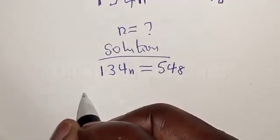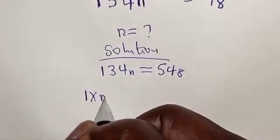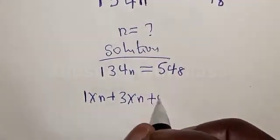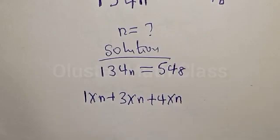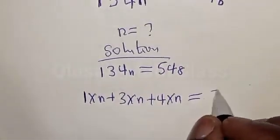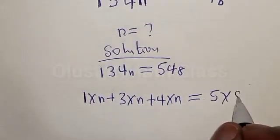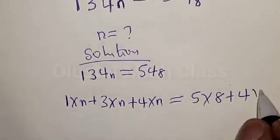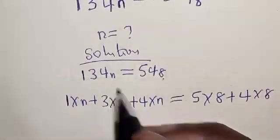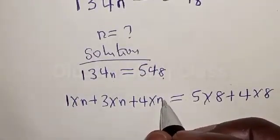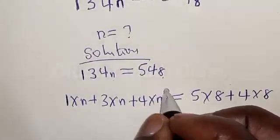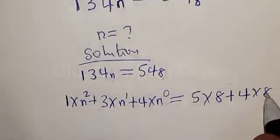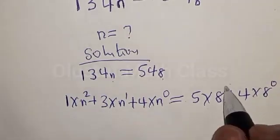We have 1 times n plus 3 times n plus 4 times n is equal to 5 times 8 plus 4 times 8, because this is base 8 and this is base n. Then we know the trick: the last digit is raised to power 0, then n raised to power 1 and n raised to power 2. Also here, the base is 8: 8 raised to power 0 and 8 raised to power 1.